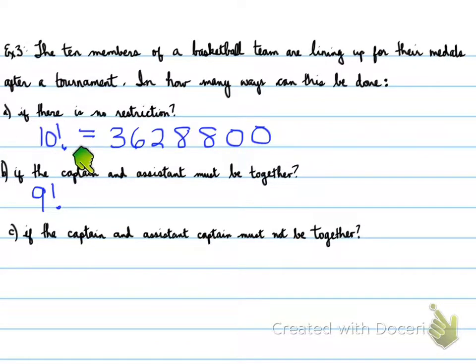If the captain and assistant captain must be together, this is like the one with the Joseph Boyden books. We need to know that these two can be together, so they count as one block. It doesn't matter what order they're in. We know that we have 9 factorial times 2 factorial, and we get an answer of 725,760.